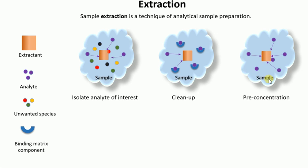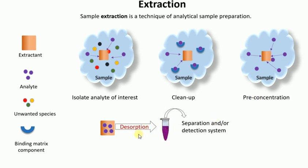Therefore the primary goals of sample extraction are: isolation of the analyte of interest, clean-up of the sample, and pre-concentration of the analyte of interest. Once sample extraction is done, you can either dissolve the analyte of interest into a suitable solvent system or directly inject it into a detector. We have now covered the definition of extraction and its three key features.